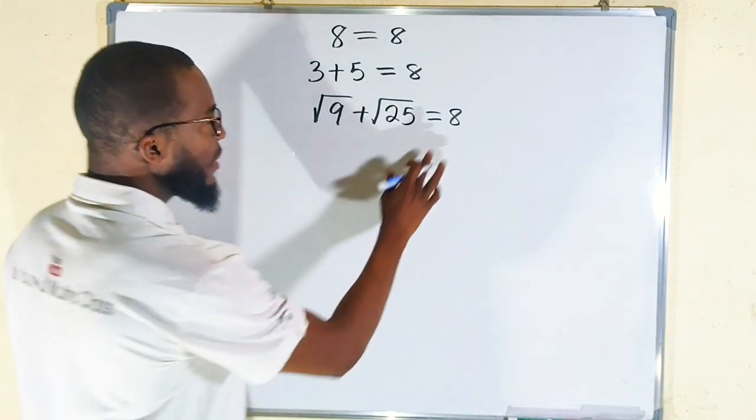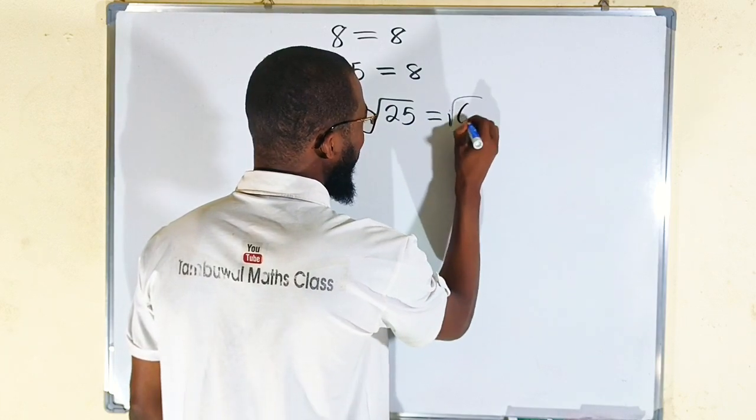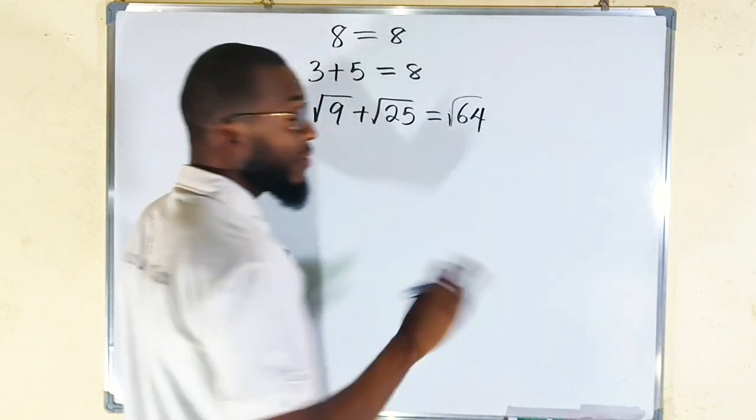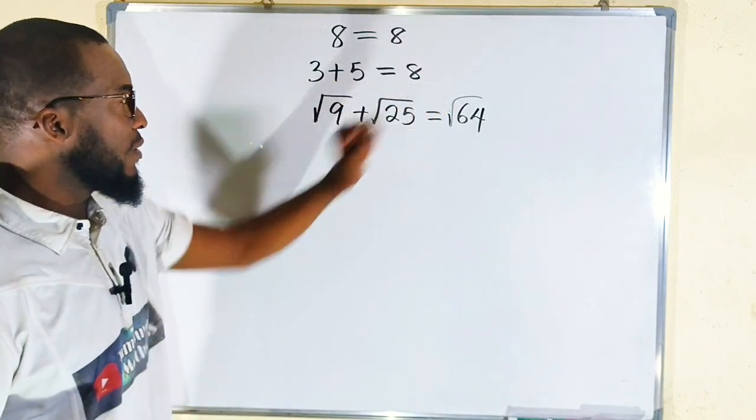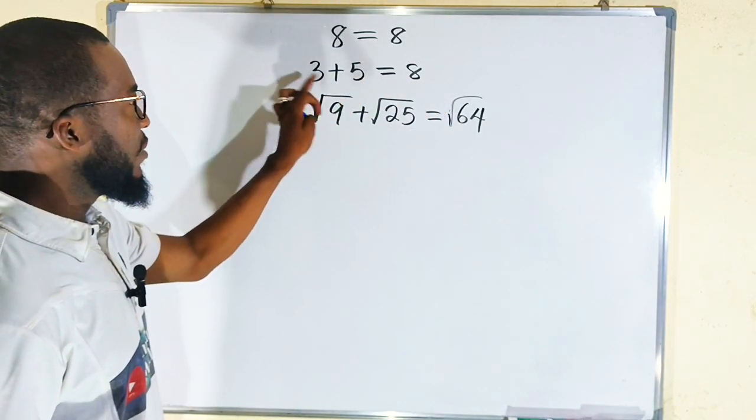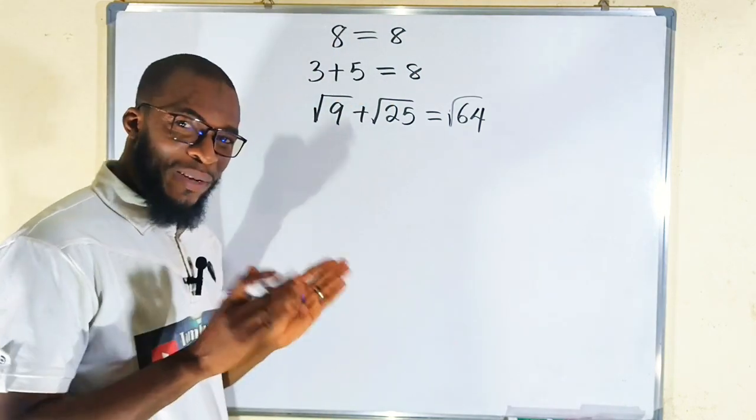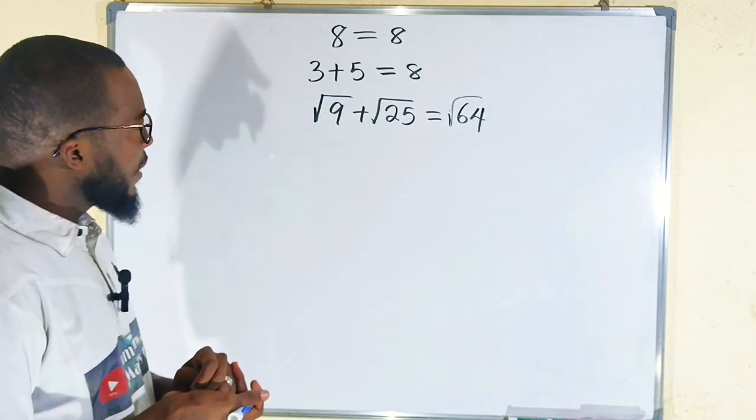But I can confidently change this 8 into square root of 64. They are all the same, right? Square root of 64 is 8, square root of 9 is 3, square root of 25 is 5. 3 plus 5 is 8, 8 equals 8. Our expression is still balanced.